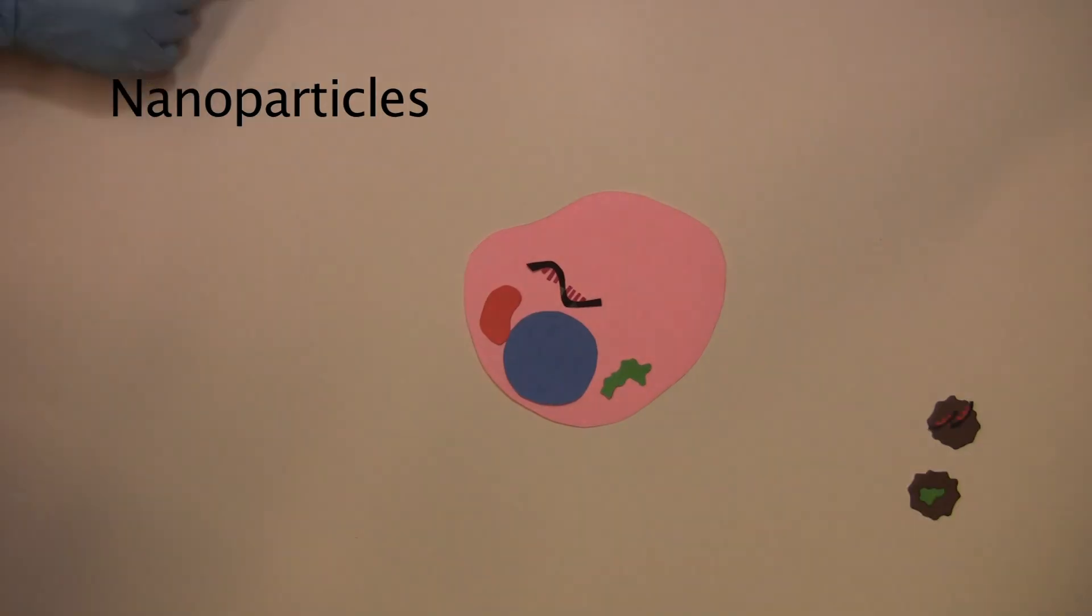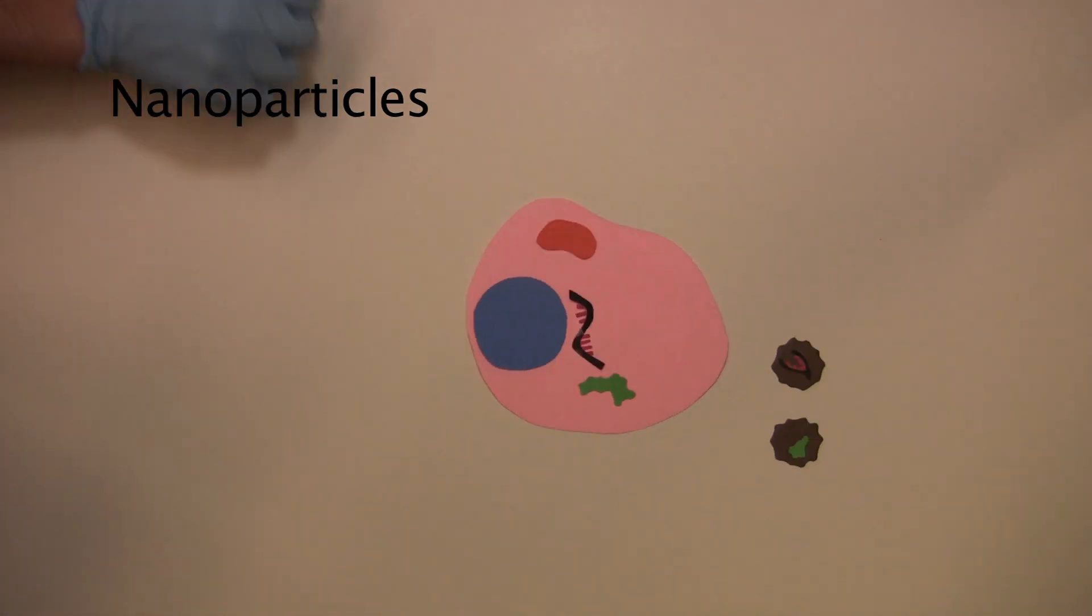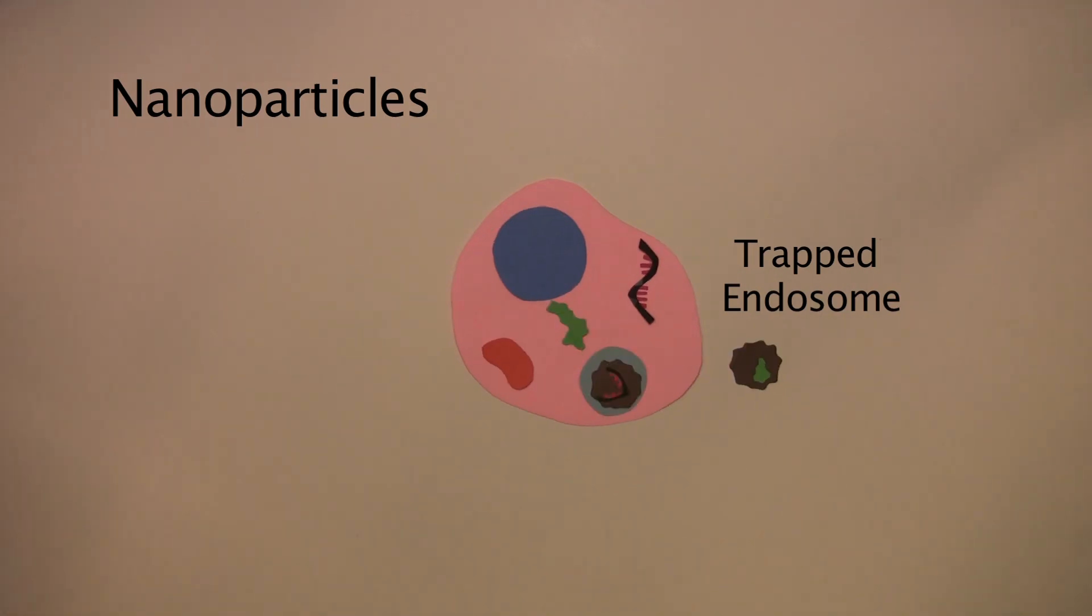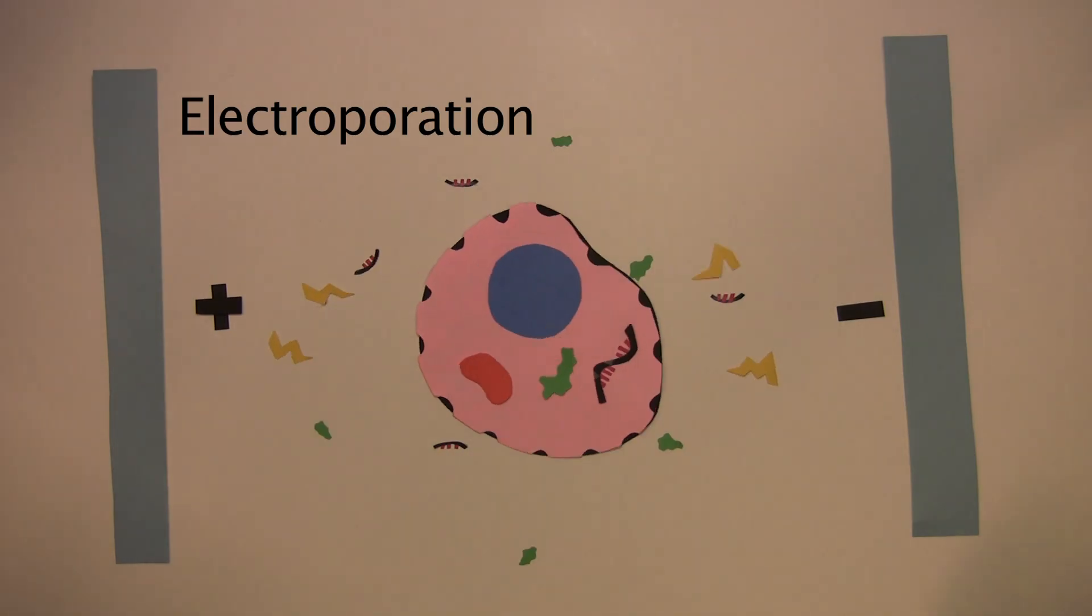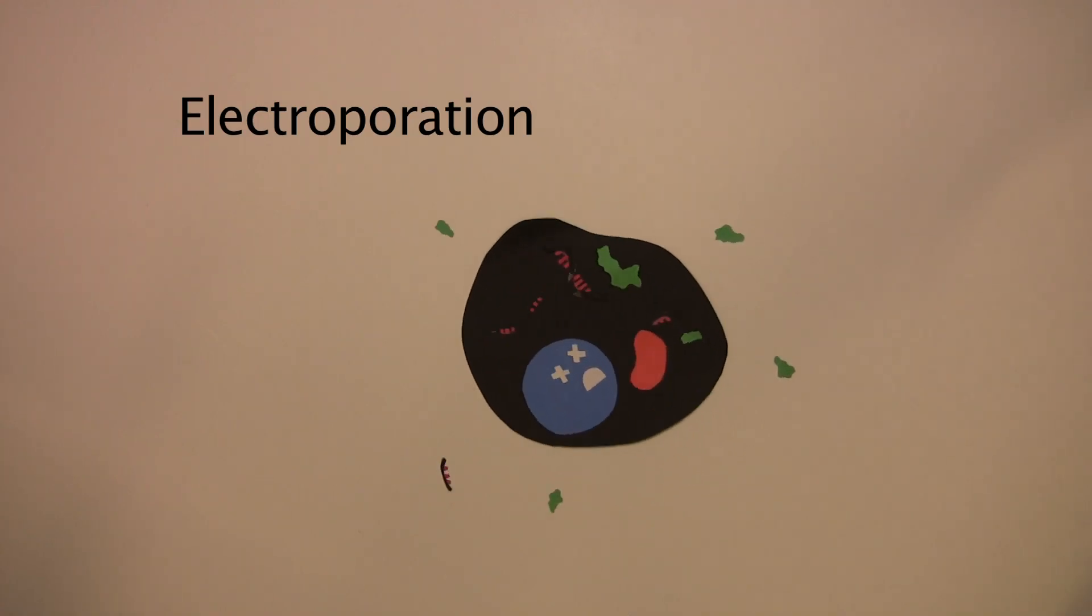Researchers have already developed some methods to deliver material into the cell. Nanoparticles, for example, can facilitate the delivery of biomolecules, but they have been ineffective in many disease applications as much material ends up stuck in cellular compartments called endosomes. Electroporation is another delivery method whereby cells are zapped in an electrical field to induce pore formation. Although effective in some applications, cells often die as a result of this treatment.